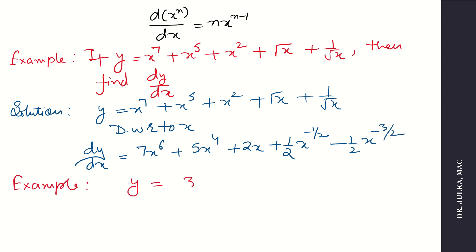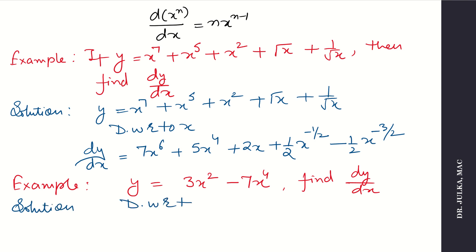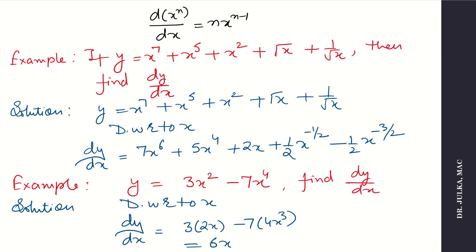Next example: if y equals 3x squared minus 7x to the power 4, find dy by dx. Differentiate both sides with respect to x. Derivative of 3x squared — 3 remains as it is and the derivative of x squared is 2x. Minus 7 remains as it is and derivative of x to the power 4 is 4x cube. So the answer is 6x minus 28x cube. When we differentiate any algebraic function with a constant and variable, the constant remains as it is and we only differentiate the variable part.